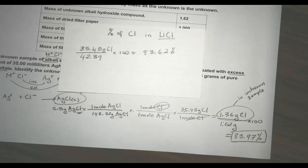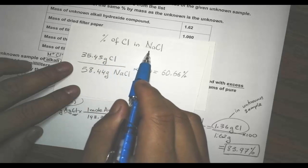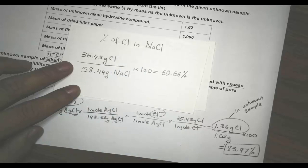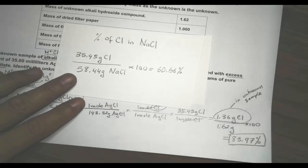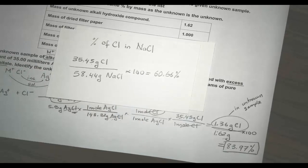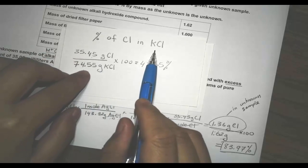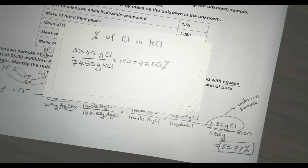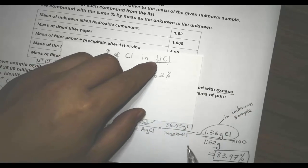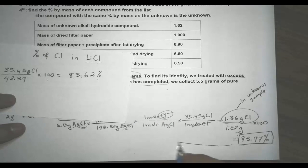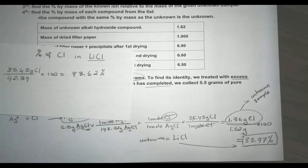For sodium chloride, I find the percent by mass of chlorine the same way: 35.45 divided by the molar mass of NaCl gives 60.66%. That is very different from our value. For potassium chloride: 35.45 divided by the molar mass of KCl gives 47.55% — completely off. So our identity of the unknown is going to be lithium chloride. The unknown equals lithium chloride.